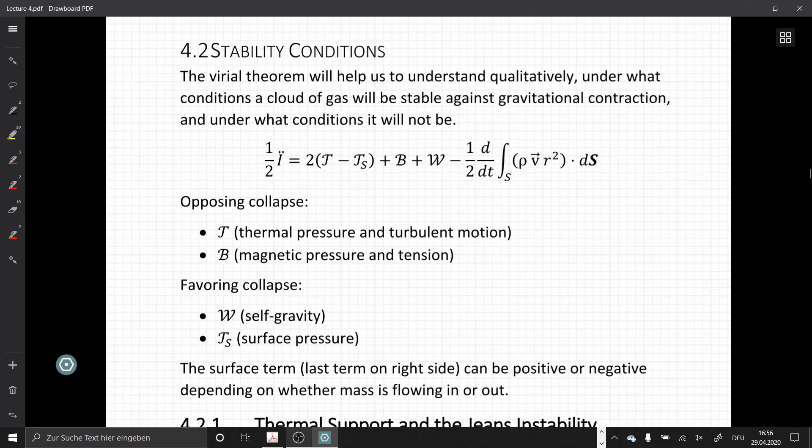Writing down the Virial Theorem again, we have terms that oppose the collapse: the thermal kinetic energy term T, which drives particles apart, and the magnetic pressure term B, which counters any compression of the magnetic field lines.